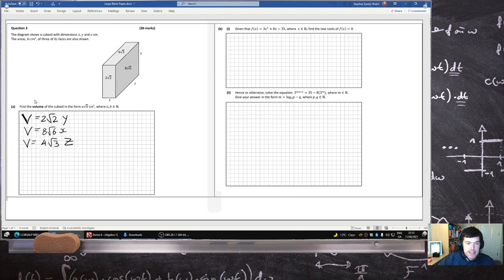If you multiply these together, you get V³ equals 64√2 times 6 times 3. Well, that's 36 actually, times x, y, z.